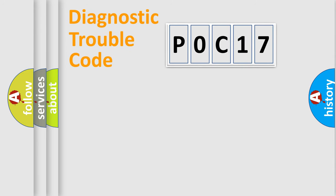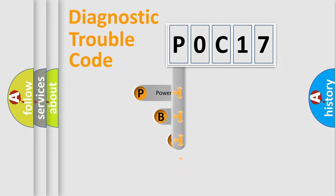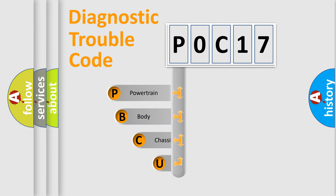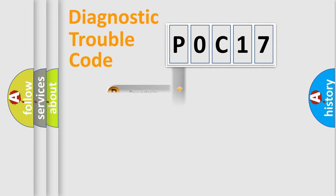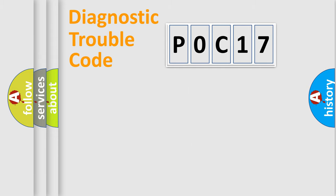Let's do this. First, let's look at the history of diagnostic fault code composition according to the OBD2 protocol, which is unified for all automakers since 2000. We divide the electric system of the automobile into four basic units: Powertrain, Body, Chassis, and Network.